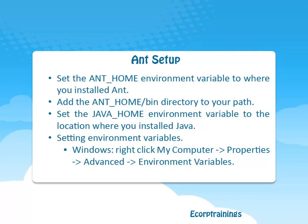Coming to Apache Ant setup. Set the ANT_HOME environment variable to where you installed Ant. Add the ANT_HOME\bin directory to your path. Set the JAVA_HOME environment variable to the location where you installed Java. To set environment variables in Windows, right-click on My Computer, go to Properties, then Advanced, then Environment Variables. For Unix, use shell-specific settings.